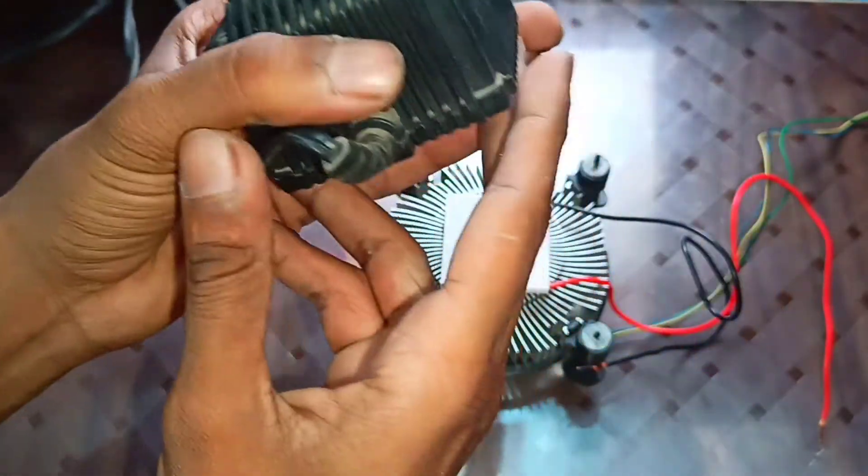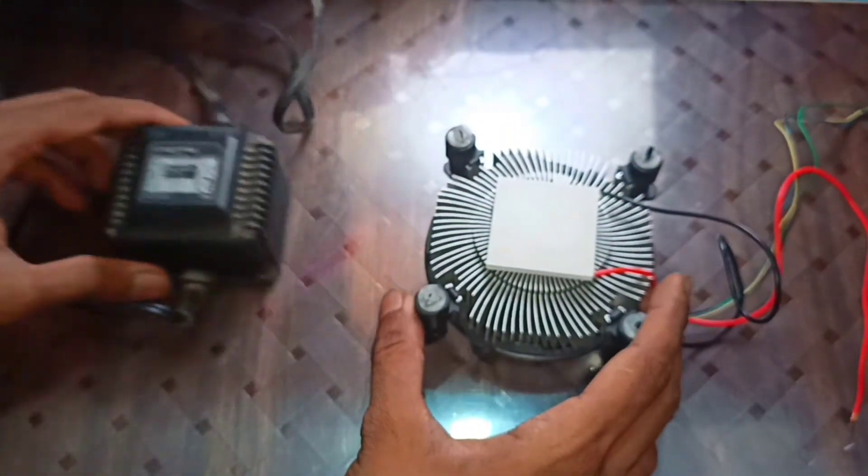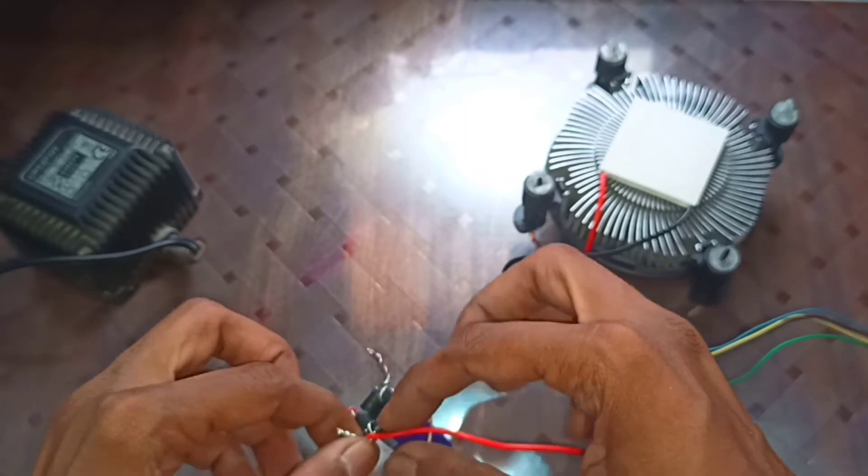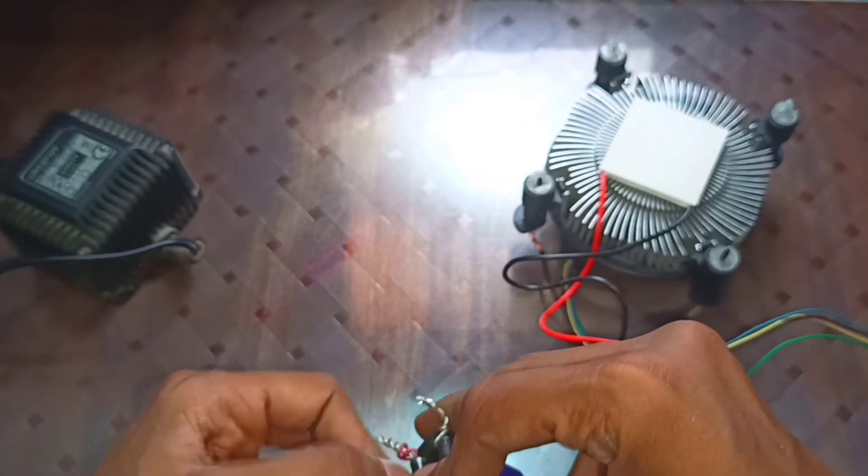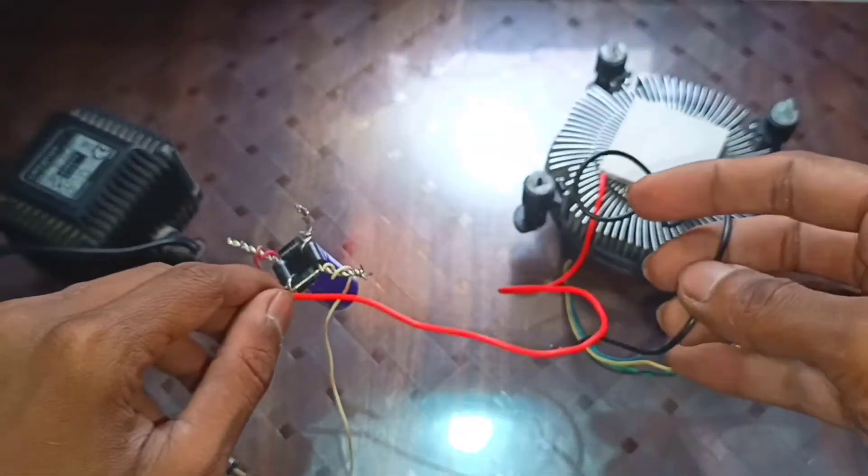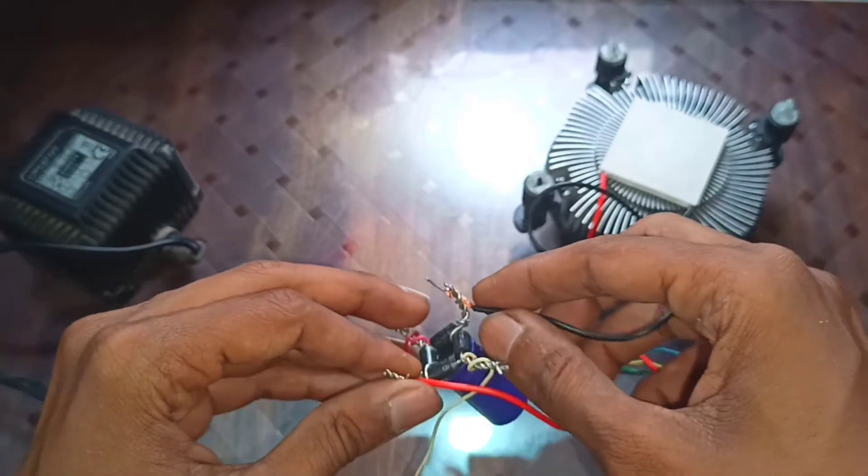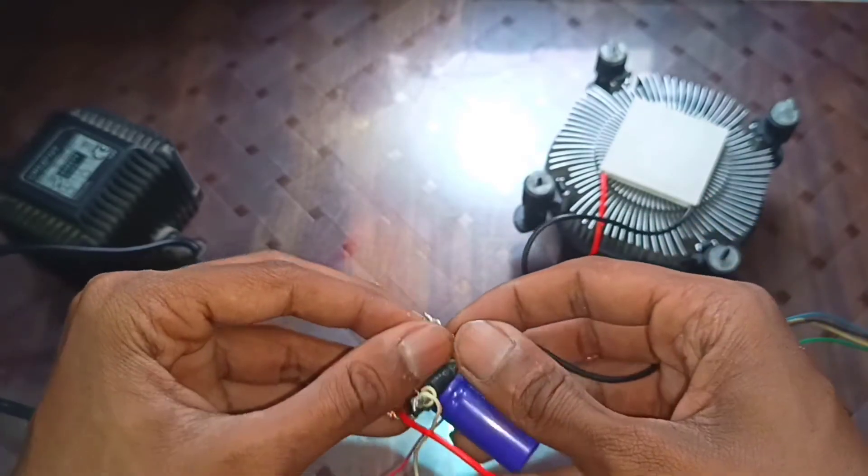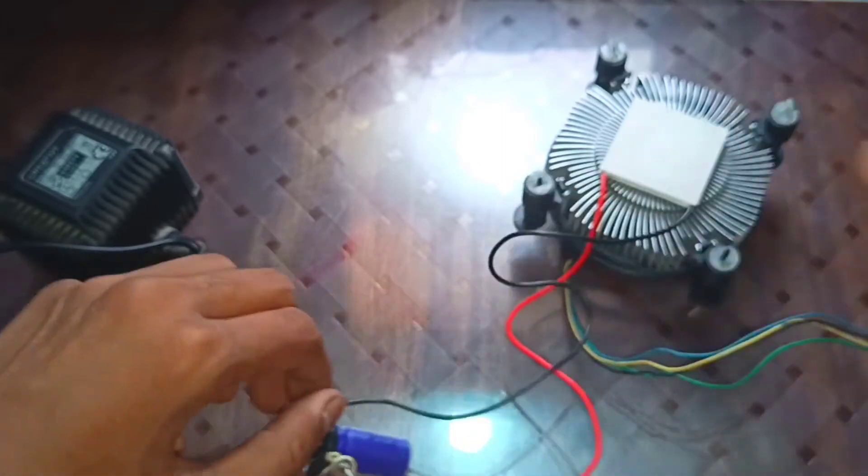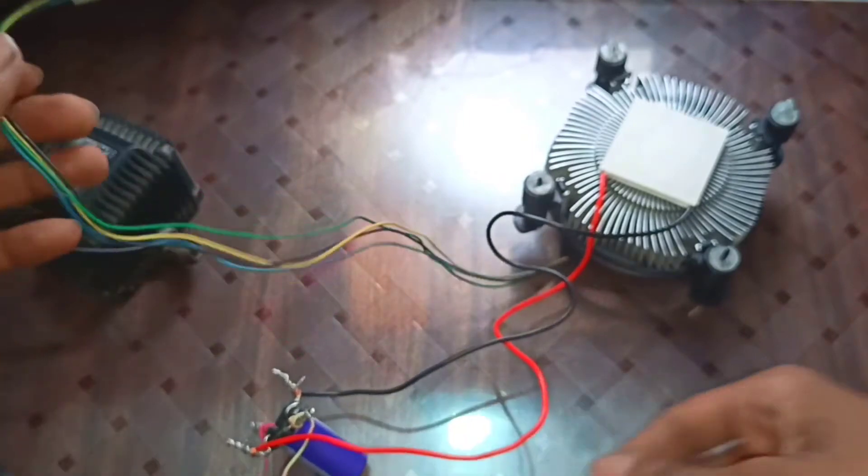Here the power supply is 12 volt 3 ampere. The connection we have done with our power supplies - I have built a filter here. I will use the filter simply AC to DC convert. Negative wire, now I will put the wire. So the connection is complete.